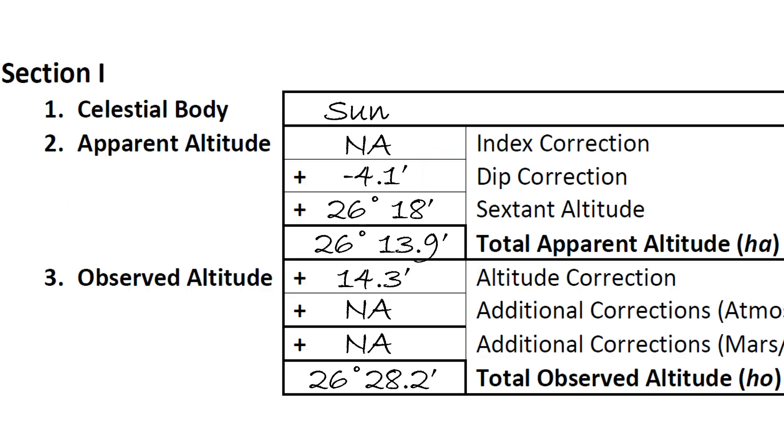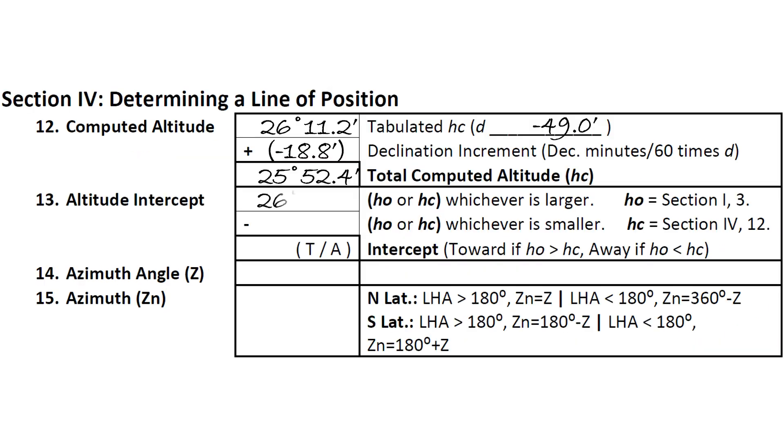In our example, HO is greater than HC. We see in Section 1 that we had calculated an HO of 26 degrees and 28.2 arcminutes, so we note this on the sight reduction form.